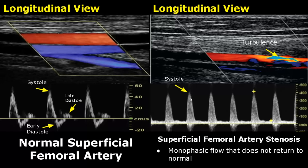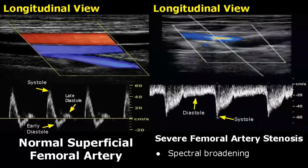This waveform does not return to normal triphasic waveform in case of stenosis. Whenever there is turbulent flow, spectral broadening will be seen and is indicative of stenosis. You can see this waveform is much wider than the normal waveform and it is biphasic. This flow is seen below the baseline because the position of the probe is such that blood is flowing away from the probe — that is why it is blue in color, but it is actually the femoral artery, just like in this normal image.